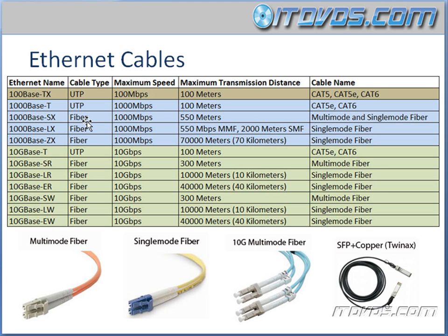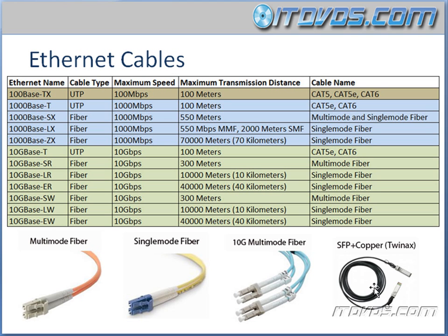Then 1000BaseX SX — this is going to be fiber. Here we've got some examples of fiber cables so if you see them you know what they are. This is called multi-mode fiber, and normally it's an orange color. We've standardized on colors to let us know what type of fiber cable it is. Single-mode fiber is going to be yellow normally, and 10G multi-mode fiber is normally going to be a bluish color. I also want to throw in the SFP+ copper twin-axe — this is used on the Cisco Nexus switches, but it's not going to be part of the test.